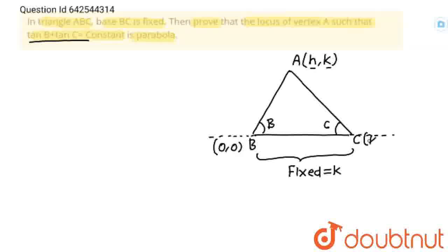So coordinates of C will be not k, k1 because k I have already taken over here. So coordinates of point C will be k1, 0. Now I am going to find tan beta, tan B not beta.